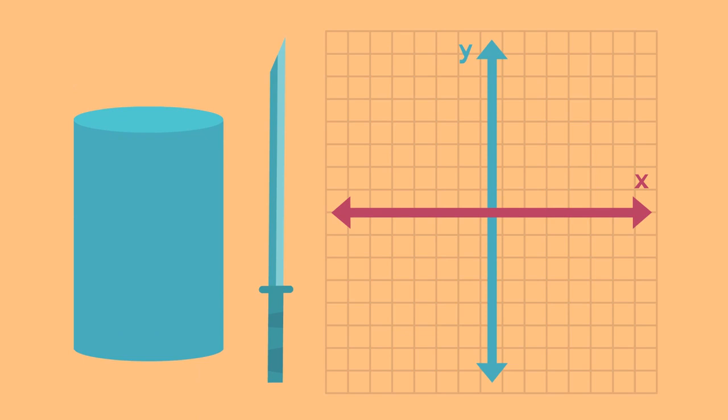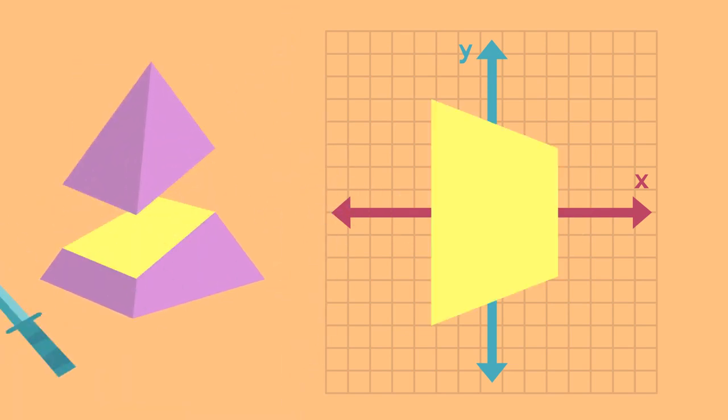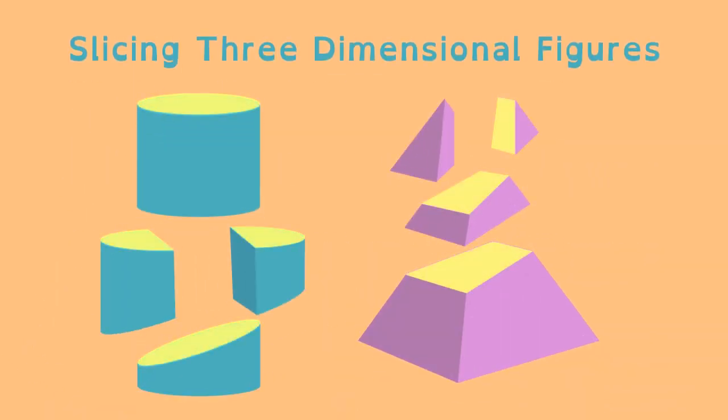Slicing diagonally can produce different shapes such as an ellipse or a trapezoid. Understanding the two-dimensional shapes that result from slicing solid three-dimensional figures is important for geometry and ninjas.